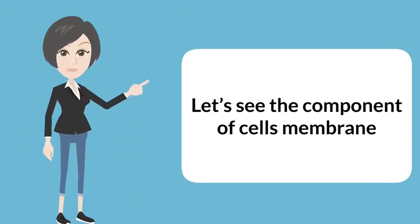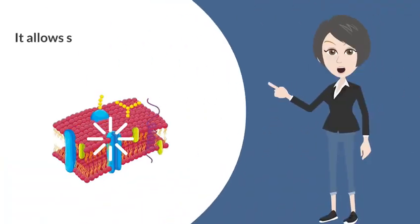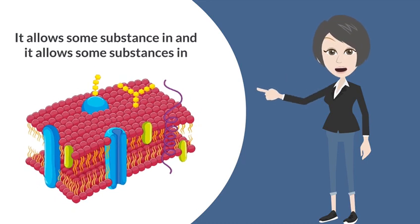Let's see the components of the cell. Cell membrane: This is the outer boundary of the cell, like skin. It allows some substances in and keeps the extras out.